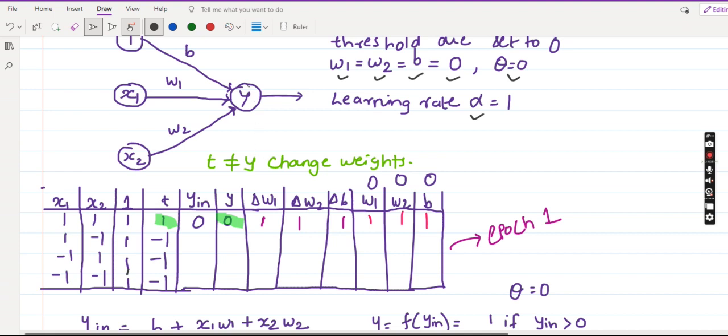Y_in is the net input that we calculate here. So the output neuron is going to have two parts, one is the summation part and then is the activation function part. So y_in we calculate the summation of the inputs using the equation that we have seen previously.